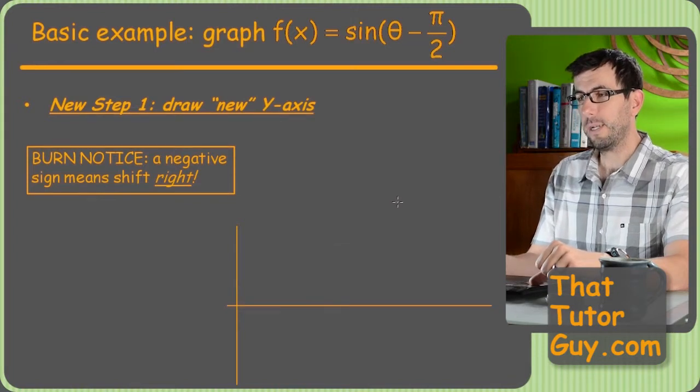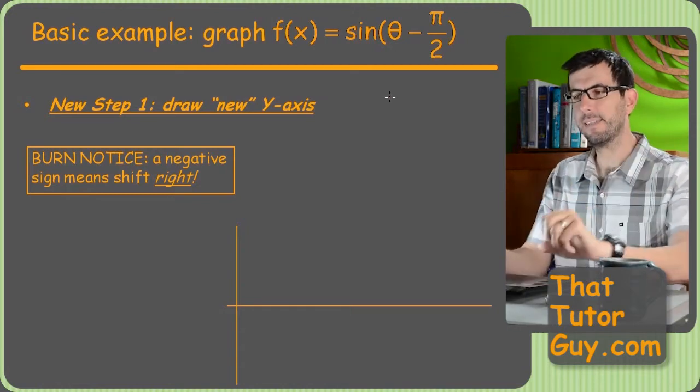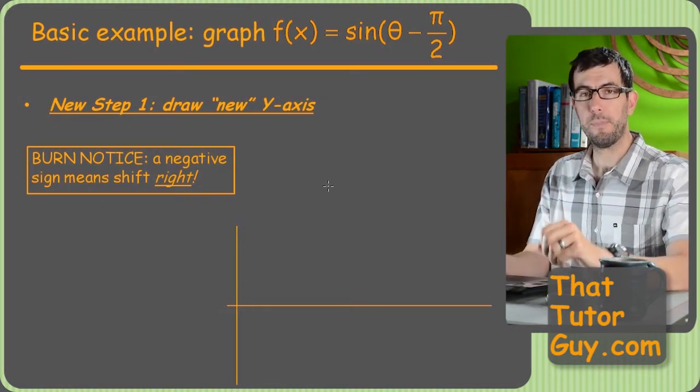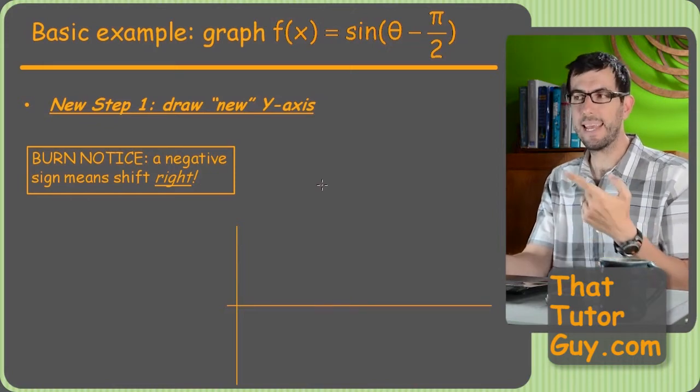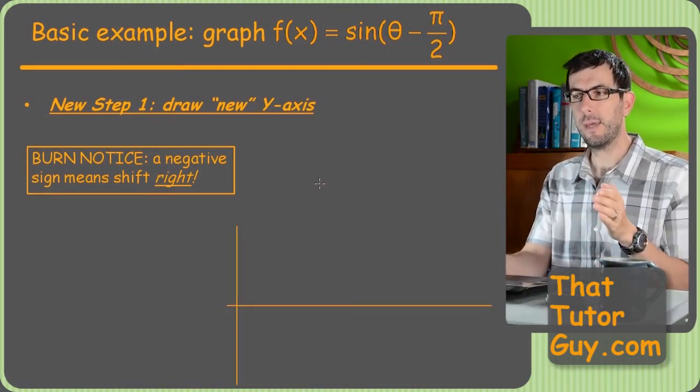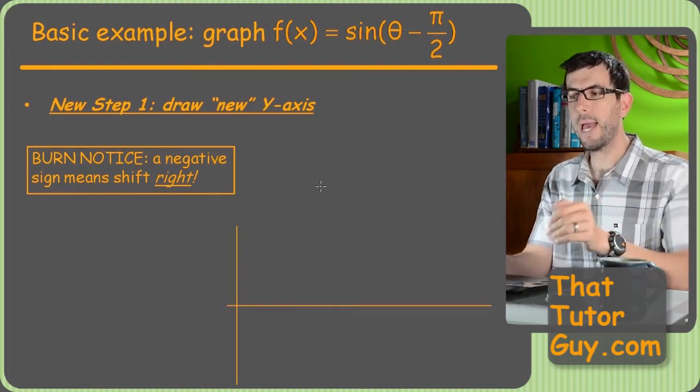Basic example, here we go. So the new step we're going to add to our process is a new y-axis. So just like a vertical shift caused us to move things up or down, and we'll get to some of those later that have both that and this, the element or step that this phase shift is going to add to our process is to put a new y-axis.